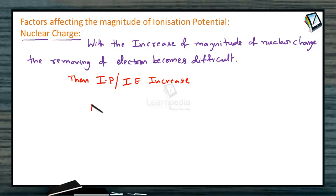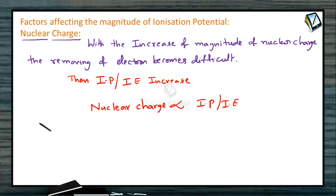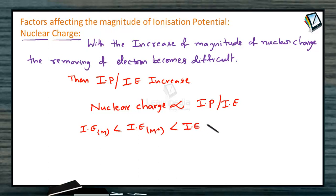Nuclear charge is directly proportional to the ionization energy or ionization potential. The removal of an electron from an isolated neutral atom is easier compared to removal from a uni-positive ion, because increasing the nuclear charge increases the power of attraction. So, the ionization potential for a neutral atom is less compared to that of a uni-positive ion, which is further less compared to that of a bi-positive ion, and so on. Keep increasing the nuclear charge, ionization potential will increase.